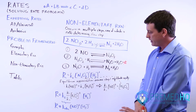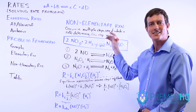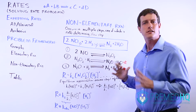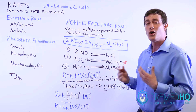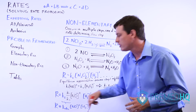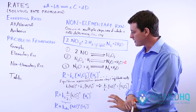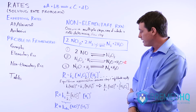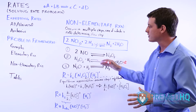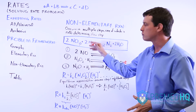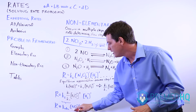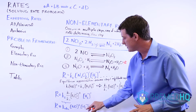That gives us a rate law expressed only in terms of the actual initial reactants of the balanced reaction. Because K2, K1, and K minus one are all just numbers, you can multiply and divide them to get a new single number. We simplify those three constants into a quantity called K observed — the observed rate constant of the overall reaction. We end up with: rate equals K observed times NO squared times H2 to the first power.